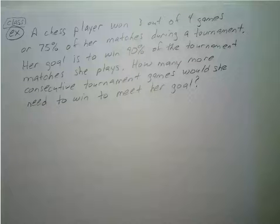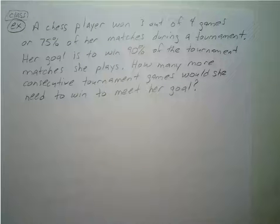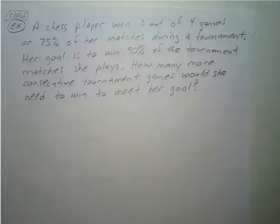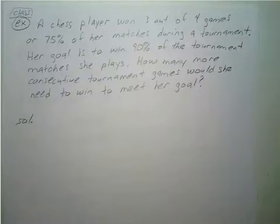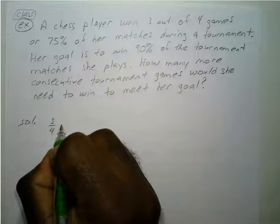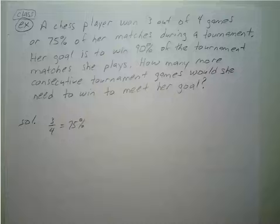A chess player won three out of four games, or 75% of her matches during a tournament. Her goal is to win 90% of her tournament matches. How many more consecutive tournament games would she need to win to meet her goal? This one is a little different than the previous two — we want to find how many more consecutive matches she would need to win to reach 90%.